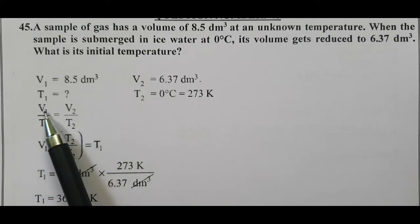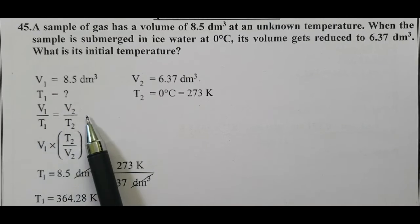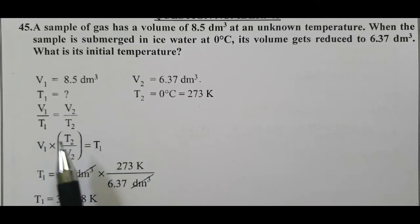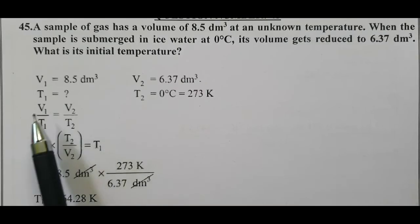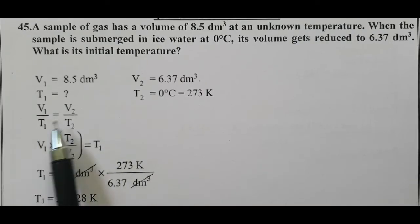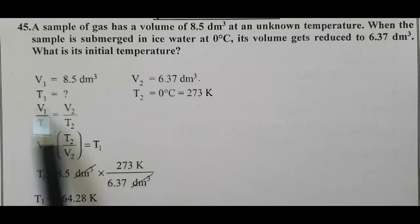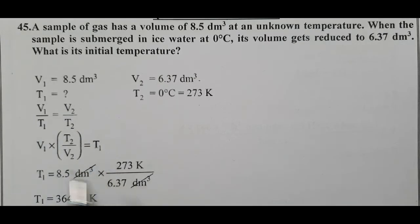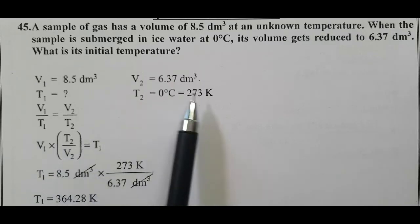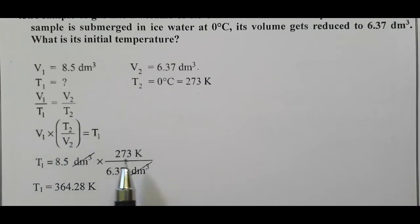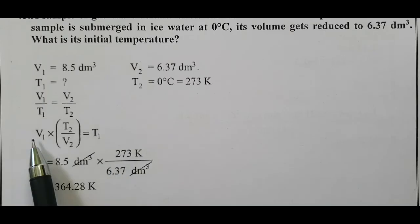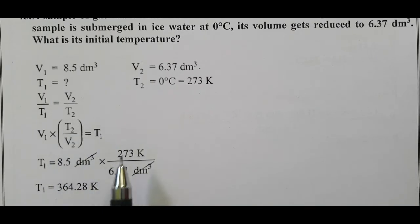We have to calculate T1. Bring T1 to the right side. T1 equals — bring V2 by T2 to the left side — so it becomes V1 into T2 by V2. T1 equal to 273 Kelvin multiplied by 8.5 decimetre cube, divided by 6.37.